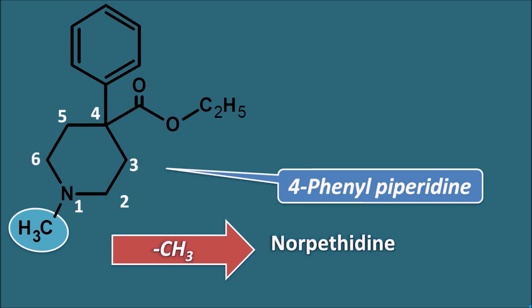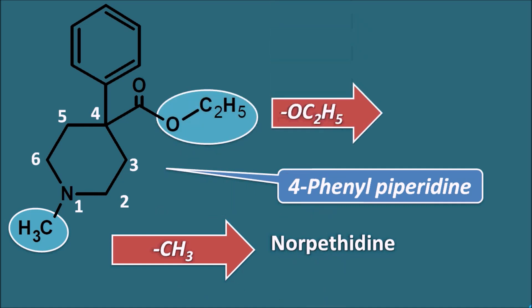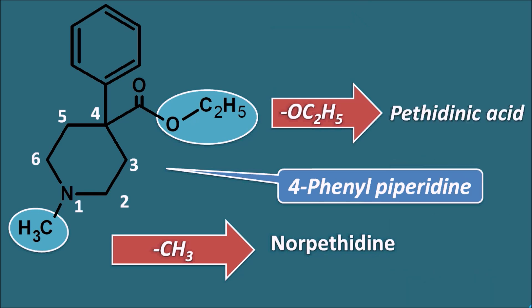Pethidine can also undergo metabolism in another way. There is an ester functionality which can undergo hydrolysis, so that the OC2H5 group is replaced with OH, producing Pethidinic acid. These are the two important metabolites of Pethidine: Nor-Pethidine and Pethidinic acid. Nor-Pethidine is an active metabolite whereas Pethidinic acid is an inactive metabolite.